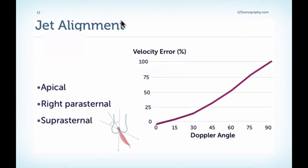It's very important that when examining a patient you achieve good jet alignment of the Doppler beam to the aortic valve velocity stream. To achieve that, use several Doppler windows: always start with the apical view, then turn to the right parasternal, and finally try the suprasternal window to get the maximum velocity. Remember, gradients are calculated from the maximum velocity, so if we don't find the maximum jet we will have falsely low gradients. Keep the Doppler angle as low as possible to minimize velocity error.